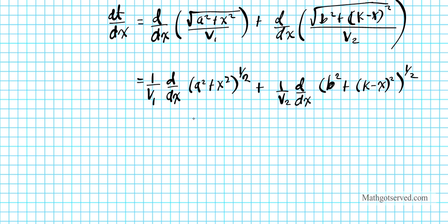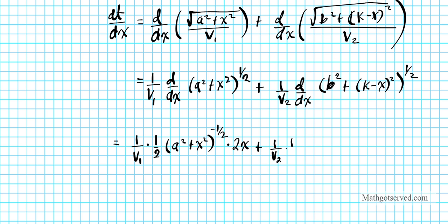Applying the power rule to the first term: 1/V₁ times (1/2)(a² + x²)^(−1/2) times the chain rule derivative of the inner expression. Since a² is constant its derivative is 0, and the derivative of x² is 2x. For the second term: 1/V₂ times (1/2)(b² + (K − x)²)^(−1/2) times 2(K − x) times negative 1 from differentiating (K − x).